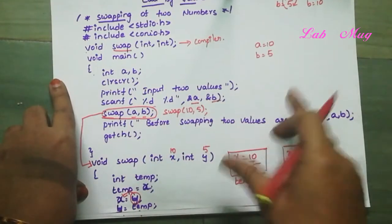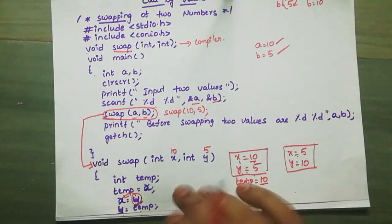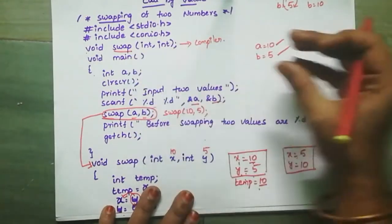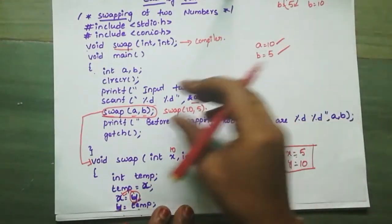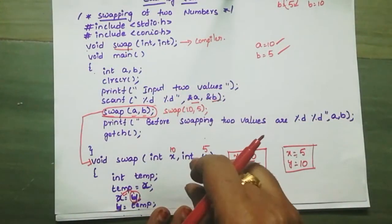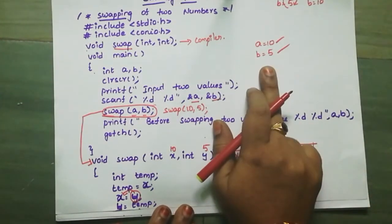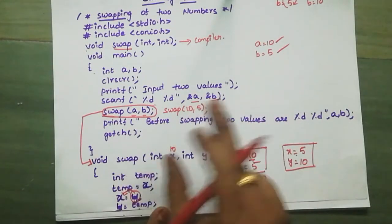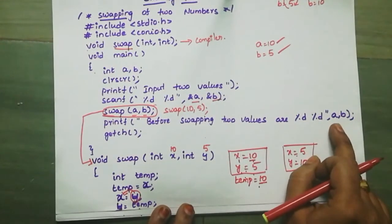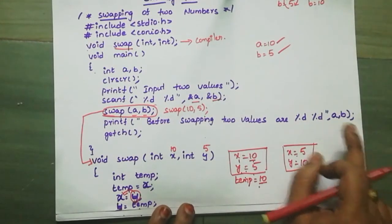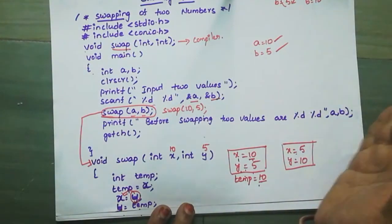Note that the main function's local variables a and b are not changed. Inside the swap function, only the XY values are changed. So AB values remain unchanged — this is the key behavior of call by value. Before swapping: a is 10, b is 5. After swapping: a is still 10, b is still 5.